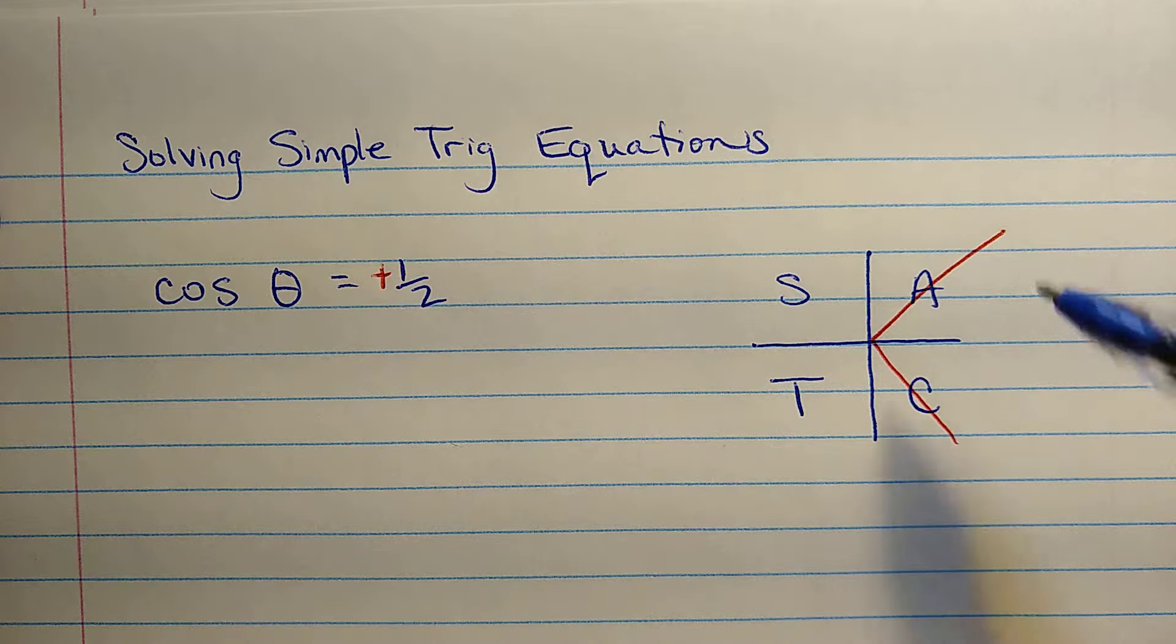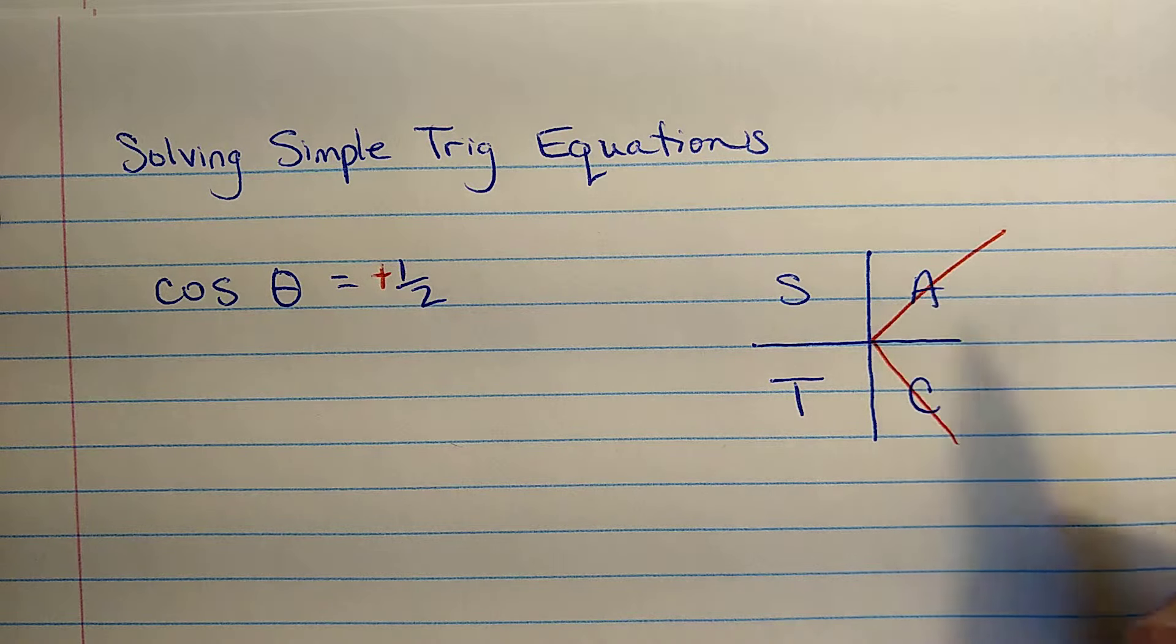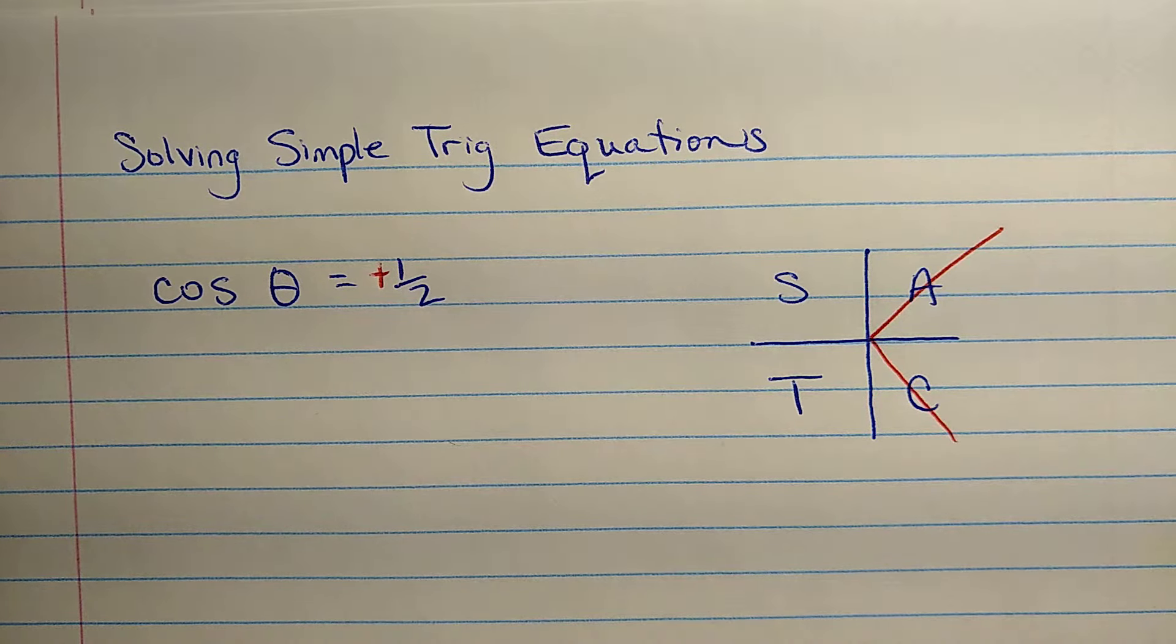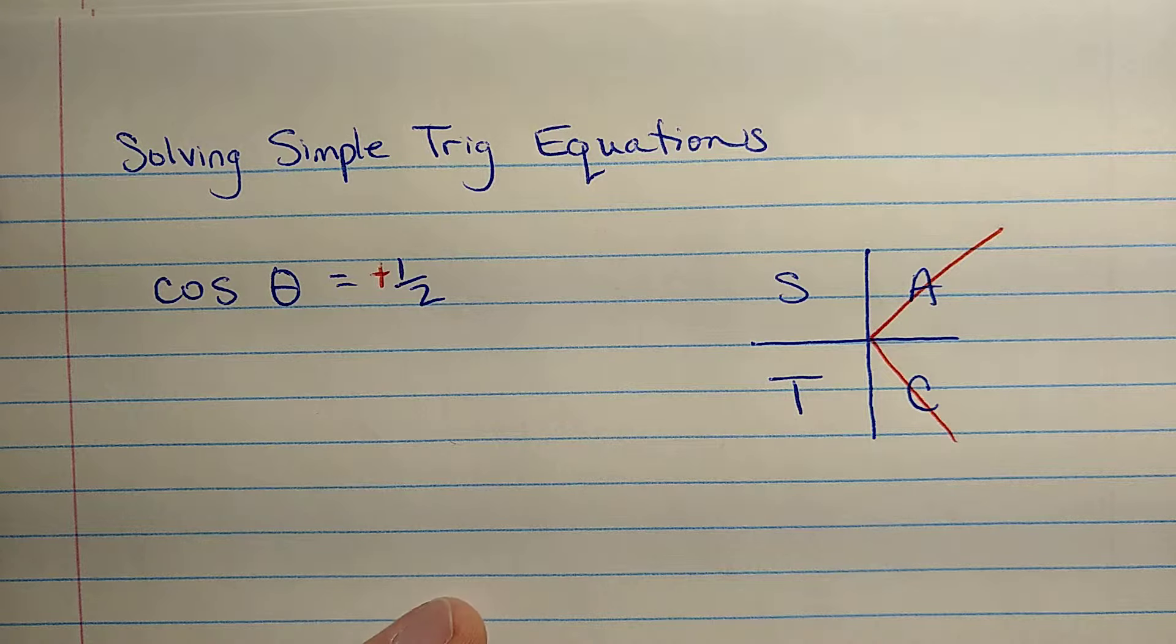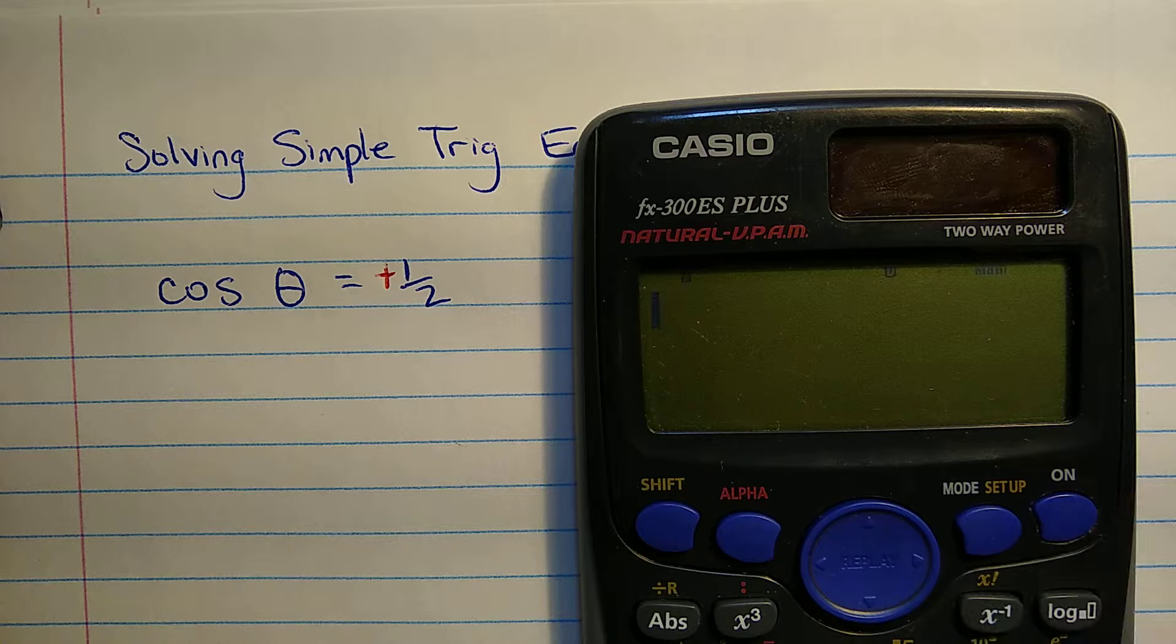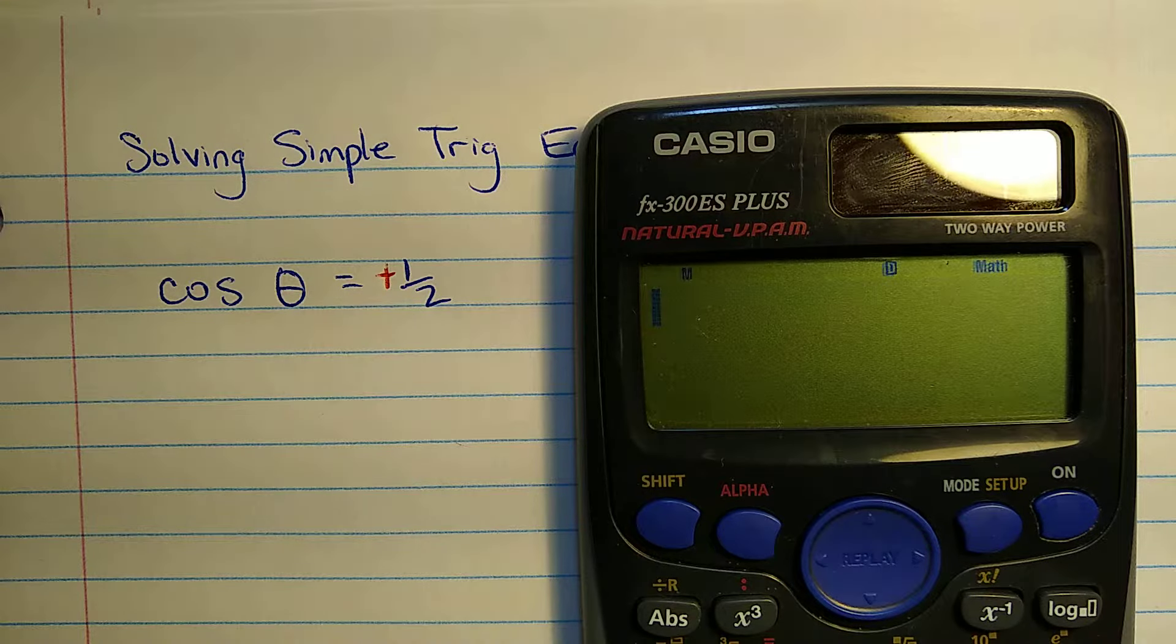Those are the two quadrants where we will get solutions. So we expect two solutions, one of them between zero and 90 degrees, and one of them between 270 and 360. This is actually a pretty nice number, one half. You could use the unit circle or a special triangle to find that. I'm just going to use a calculator to show you how that part works.